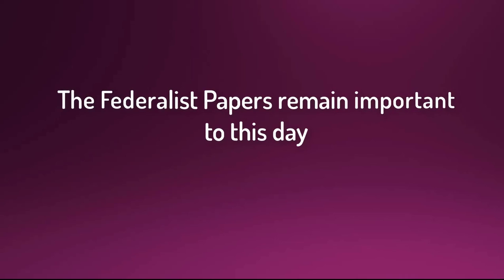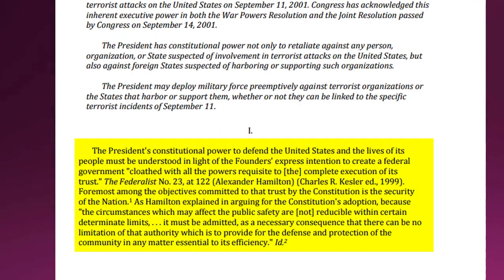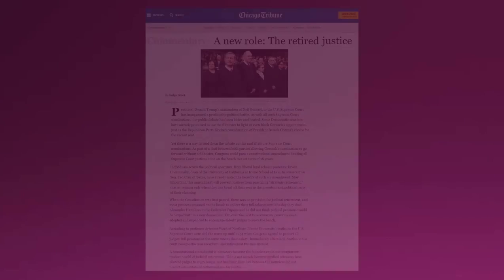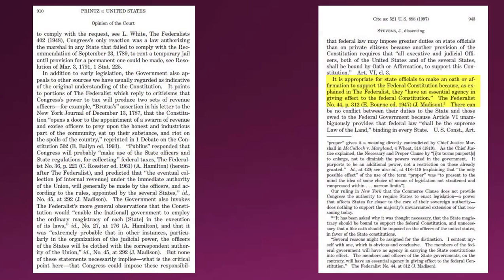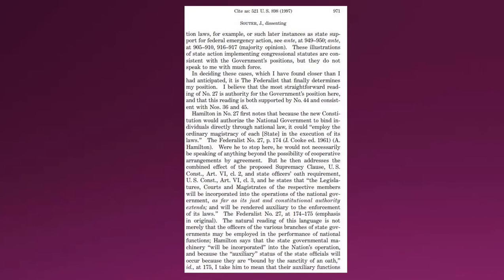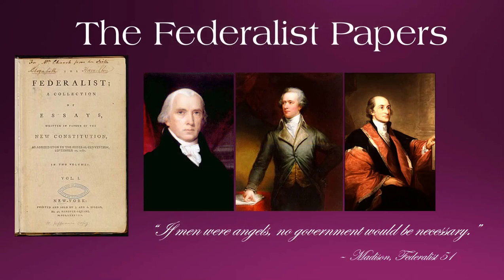The Federalist Papers remain important to this day. Judges and policymakers rely upon and quote the papers in the course of judicial opinions and political discussion. For example, President George W. Bush's administration cited Federalist 7 to defend the president's broad power in foreign policy and right to target terrorists without consent of Congress. It's not uncommon for candidates for political office to quote a Federalist paper on the campaign trail or even after assuming office. Supreme Court justices have cited Federalist 42 and 78 numerous times, often referencing these writings to determine the original meaning of the Constitution's language and spirit. One famous example: when Justice Souter, in his dissent in Printz v. U.S., wrote, quote, 'In deciding these cases, which I have found closer than anticipated, it is the Federalist that finally determines my position,' end quote. The full text of the Federalist Papers is available from the Library of Congress.